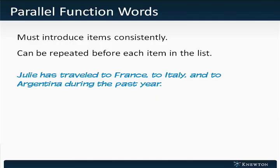When a list of two or more items needs to follow a parallel grammatical structure, function words like articles and prepositions also need to be used consistently. There are a couple of ways to do this, and we're going to look at some examples. The bottom line is that items must be introduced consistently. One way to do this is to repeat our function words before every item on our list.